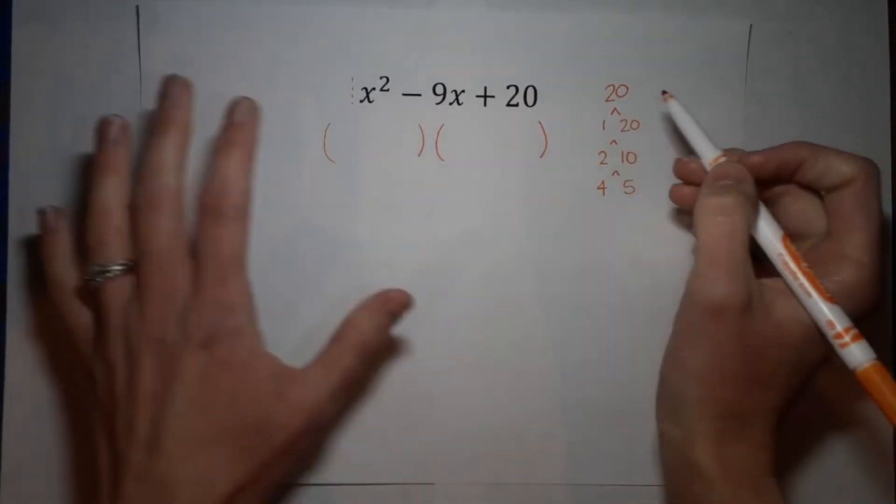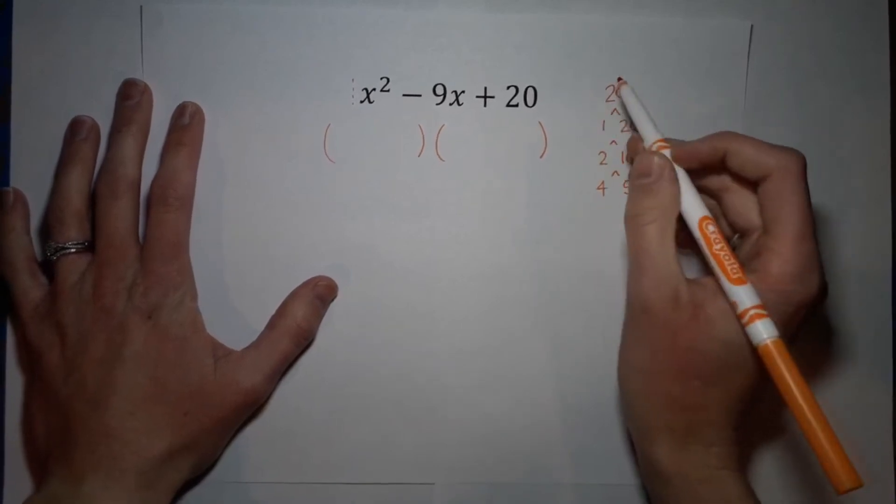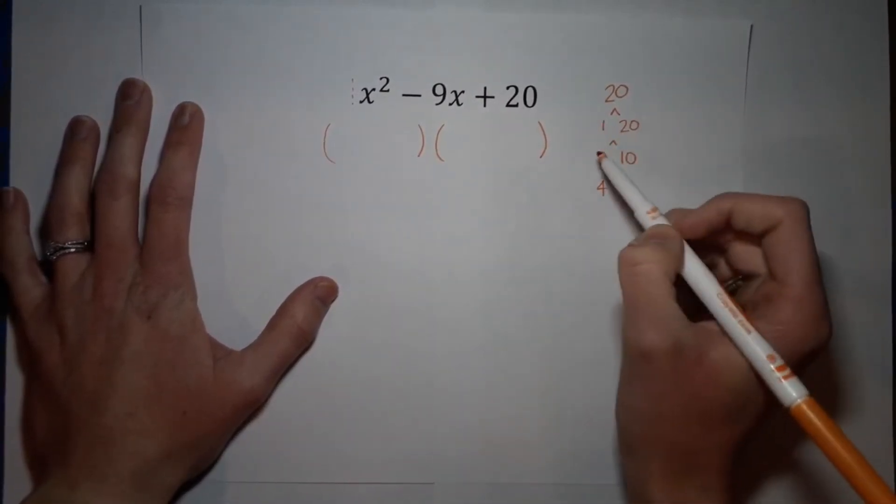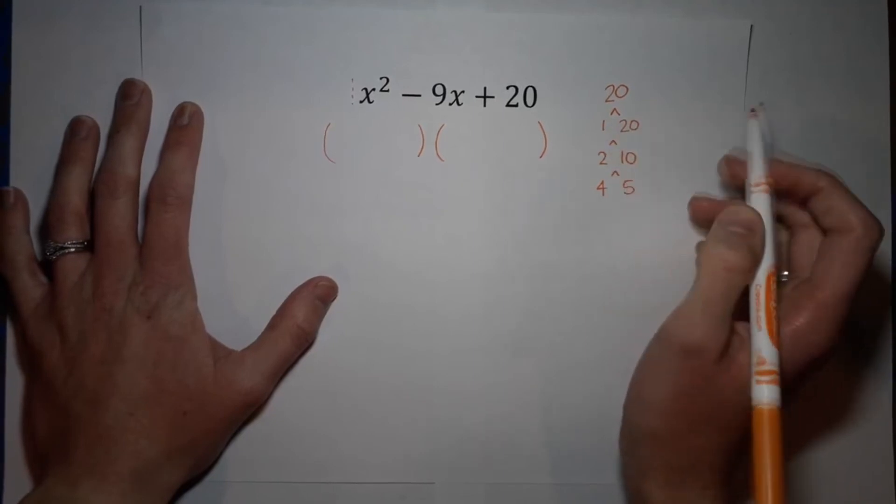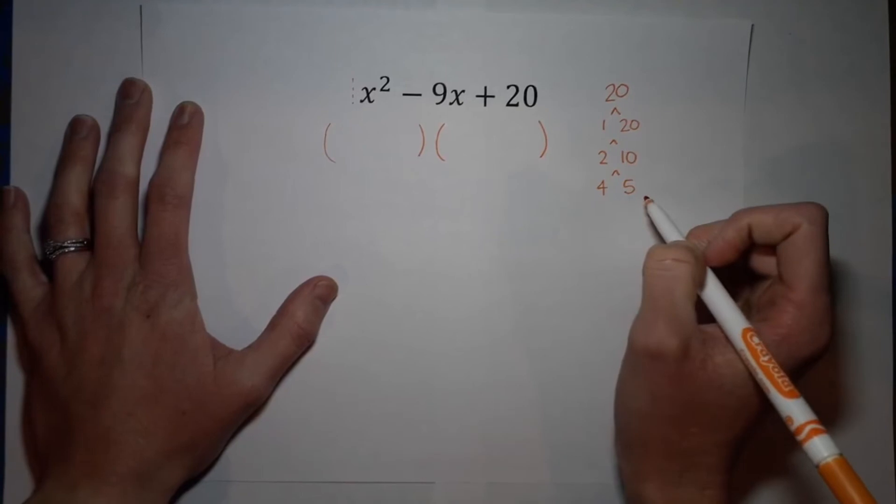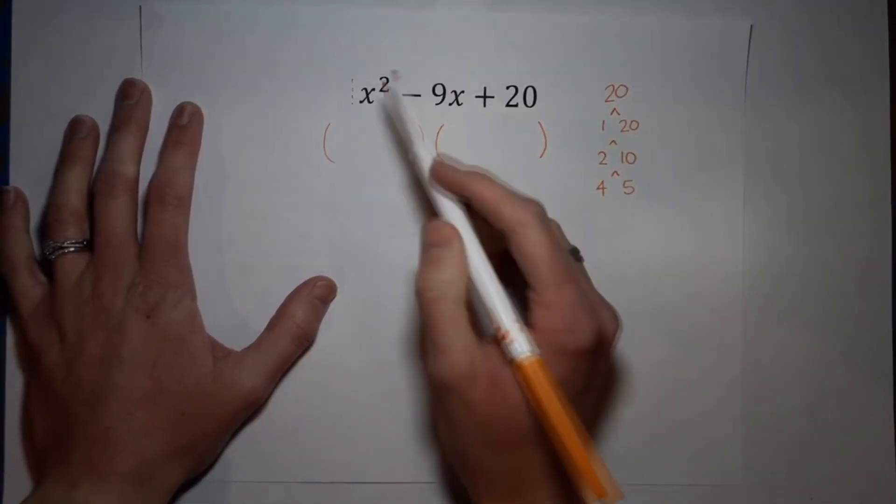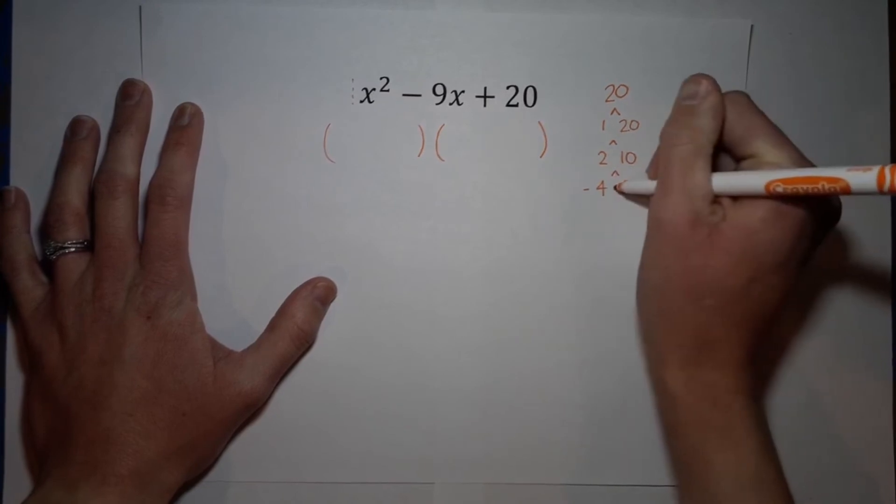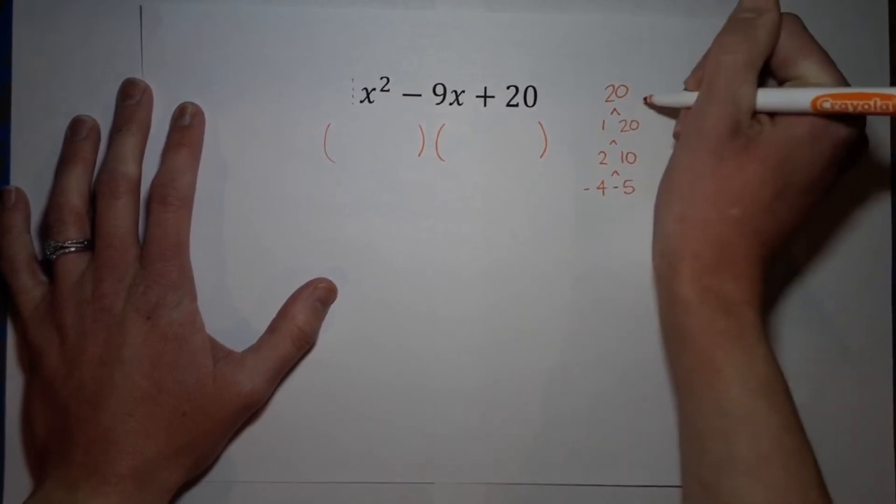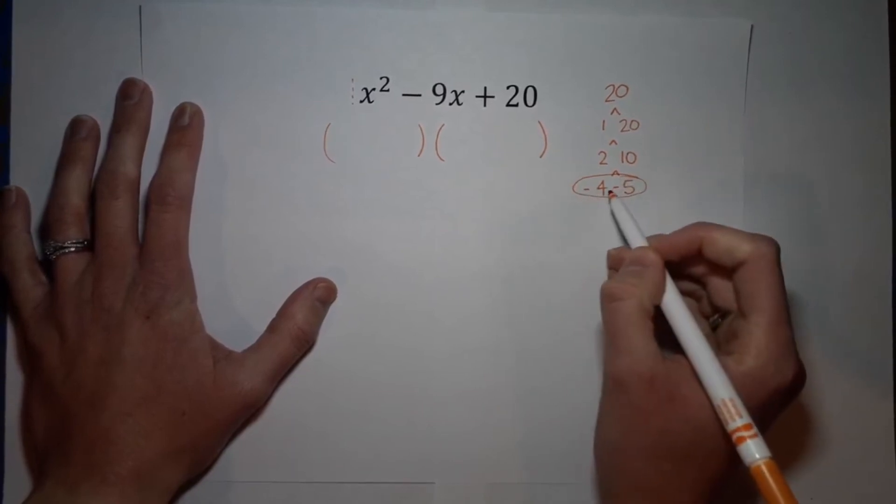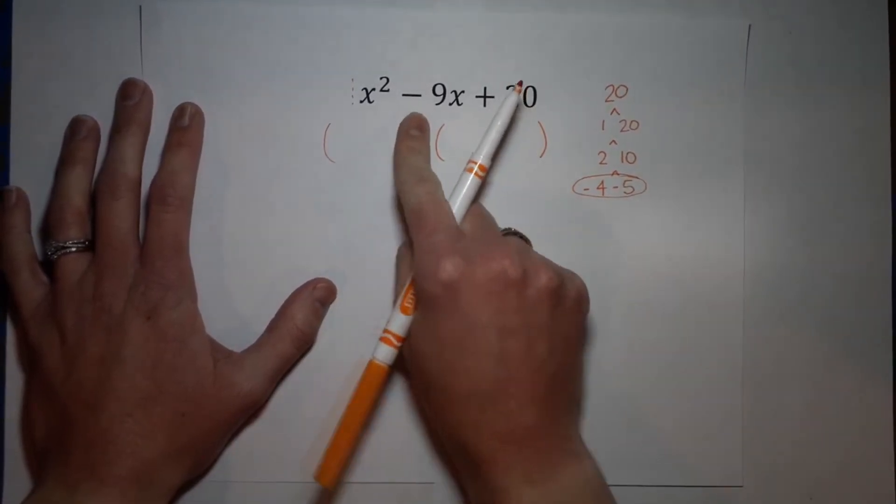So those are all the numbers that multiply to 20. Now we need them to add to negative nine. So one plus 20 is 21. No, two plus 10 is 12. No, four plus five is nine. Ooh, but I need it to be a negative nine. Well, isn't negative four times negative five also 20? Yes. And negative four plus negative five gives me negative nine.